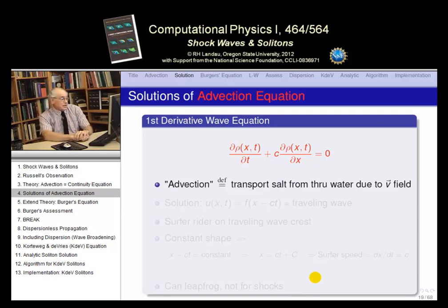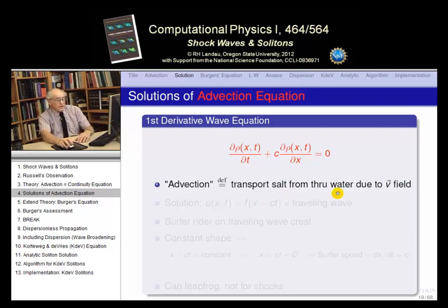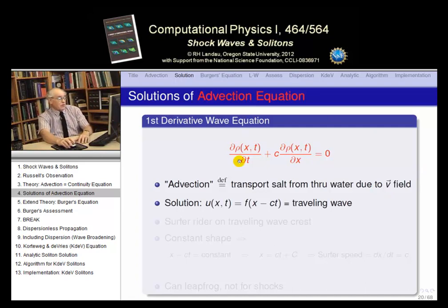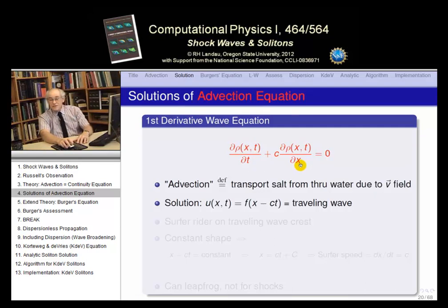On the next slide we have the advection equation: d rho/dt plus c d rho/dx equals zero. If you look up the word advection in a dictionary, one definition is the transportation of salt or any dissolved mineral in water due to the velocity field — in other words, if water is flowing, anything dissolved in it moves with the water. So it's horizontal flow from one place to another. Convection is usually considered a vertical flow.